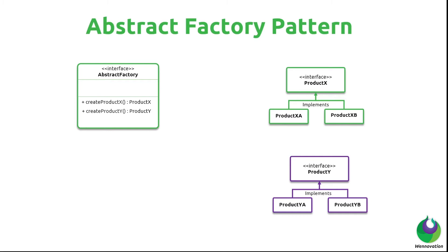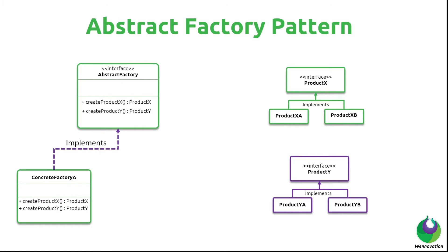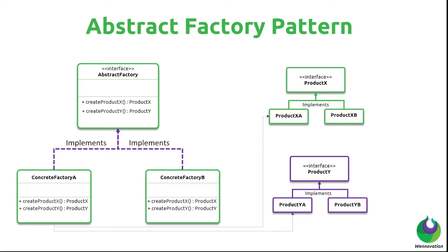You might wonder: if these two methods return generic interfaces, how do we create instances of the concrete implementations? We create a class called Concrete Factory A which implements the methods defined in the abstract factory interface. The return types remain Product X and Product Y, but deep down they return Product X-A and Y-A respectively. Similarly, there's another concrete factory implementation that returns Product X-B and Y-B.